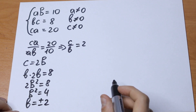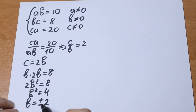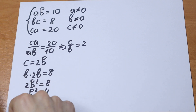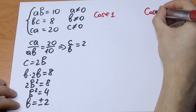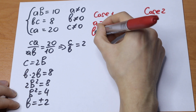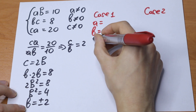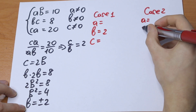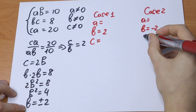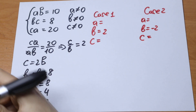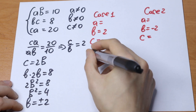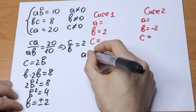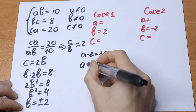Our B will be equal to plus or minus 2, so we will have two cases. Case 1: B is positive. Case 2: B will be negative. In case 1, B equals positive 2, and we can calculate A: A times 2 equals 10, so A equals 5.